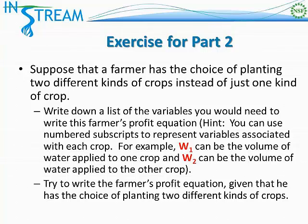One hint: you can exploit subscripts in order to make it easier to choose variable names for each variable. For example, you can use W sub one for the volume of water applied to one crop and W sub two for the volume of water applied to the other crop. So once you have picked the variables associated with this particular farmer's decision, try to write down the farmer's profit equation. Good luck.